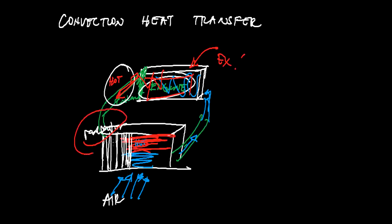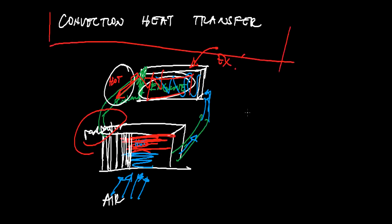This cooled coolant then goes back to the engine to recirculate and pick up heat again. This cycle repeats over and over, with the main purpose of eliminating excess heat from the engine. There is a convection heat transfer occurring in the radiator between the air, the fins, and the coolant. That is a perfect example of convection heat transfer.